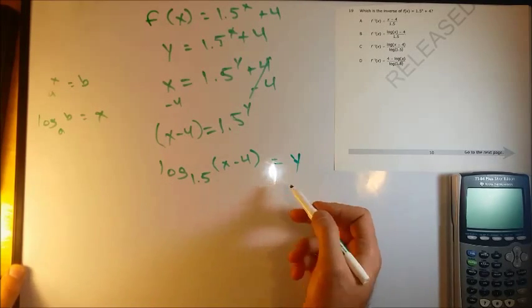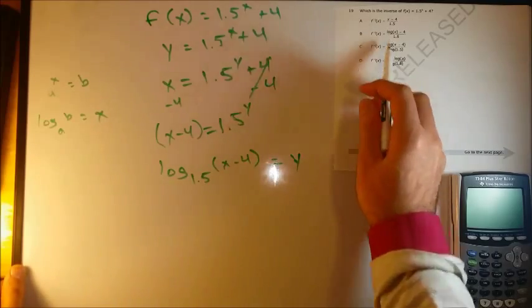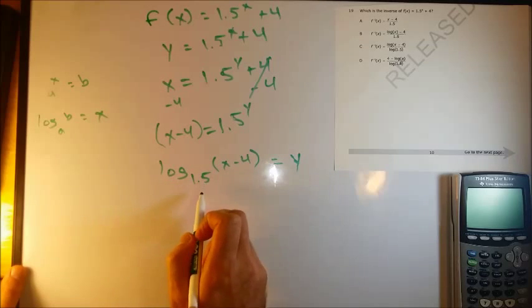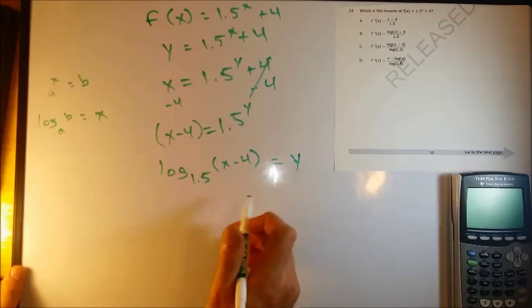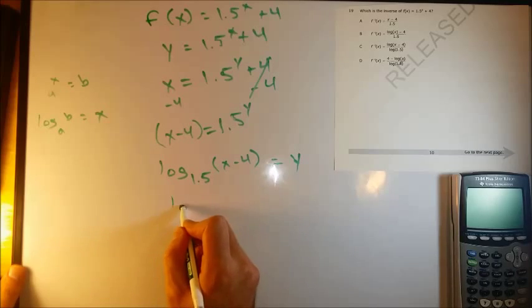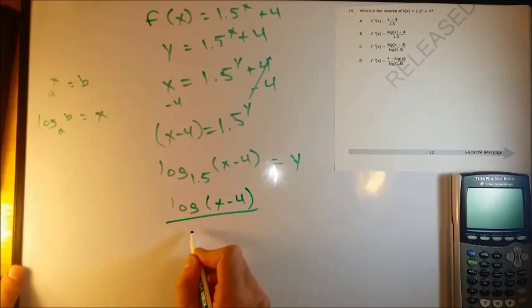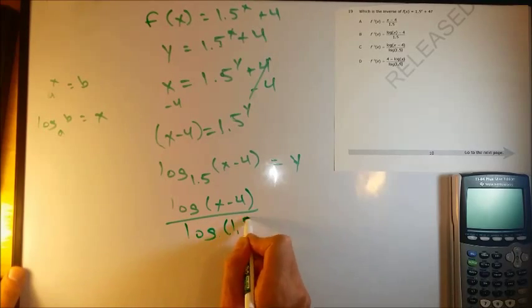So now I've got y on its own. Now this isn't any of these solutions here, but we're really close. This now, if you've got log base 1.5 of x minus 4, this is the same thing as saying log x minus 4 divided by log 1.5.